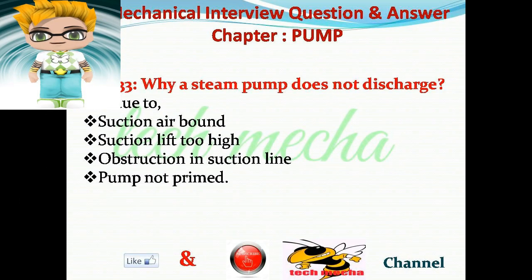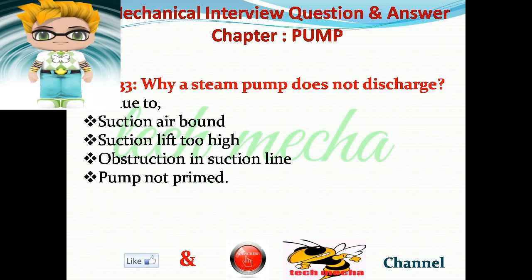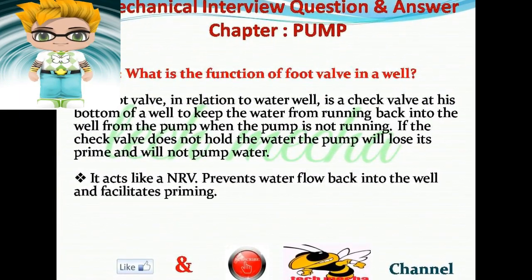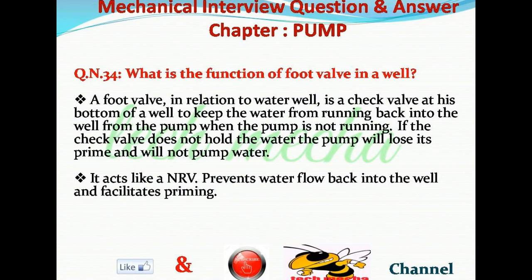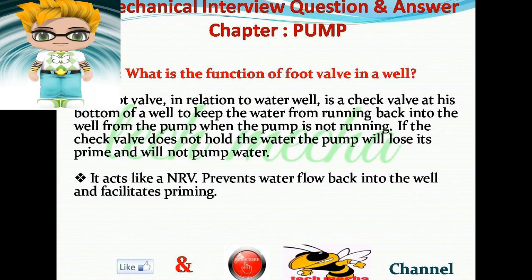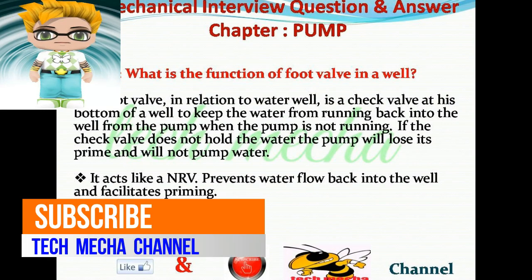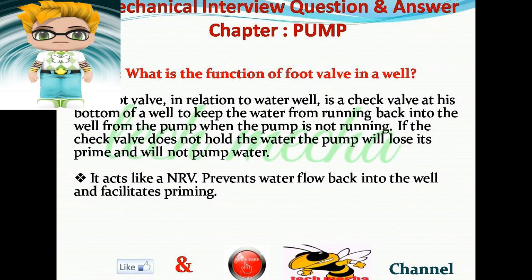Question number 33: Why does a steam pump not discharge? Answer: It is due to suction air bond, suction lift too high, obstruction in suction line, or pump not primed. Question number 34: What is the function of a foot valve in a well? Answer: A foot valve, in relation to a water well, is a check valve at the bottom of a well to keep water from running back into the well when the pump is not running. If the check valve does not hold water, the pump will lose its prime and will not pump water. It acts like an NRV, preventing water flow back into the well and facilitating priming.